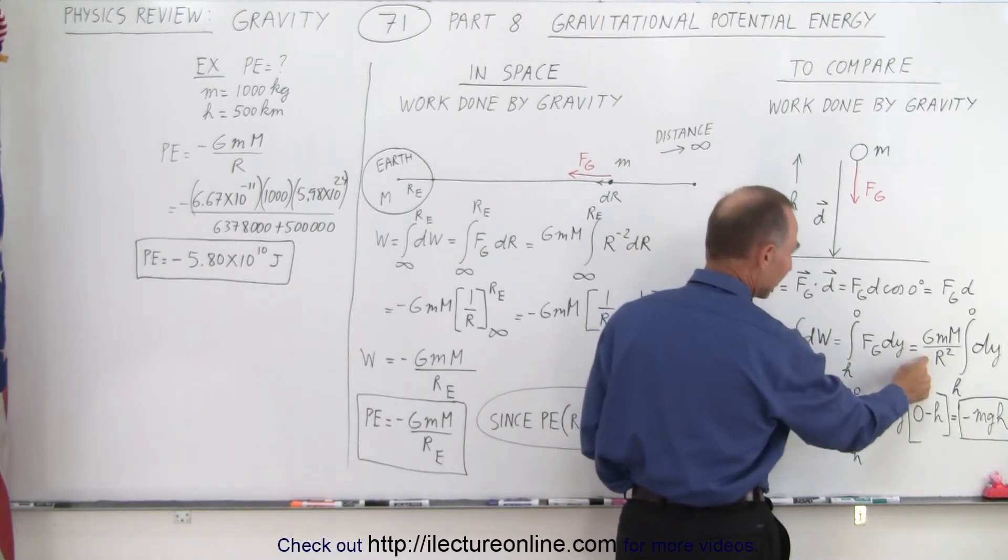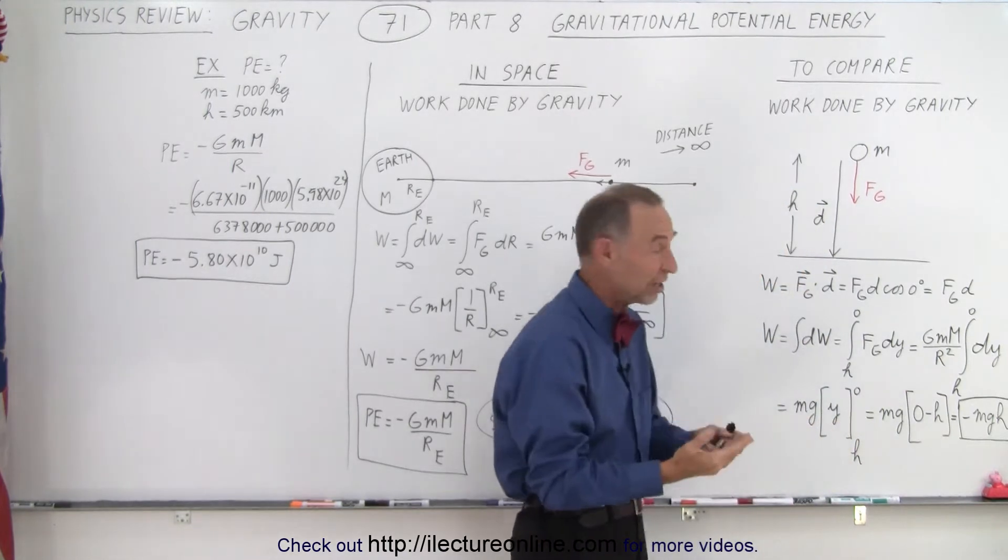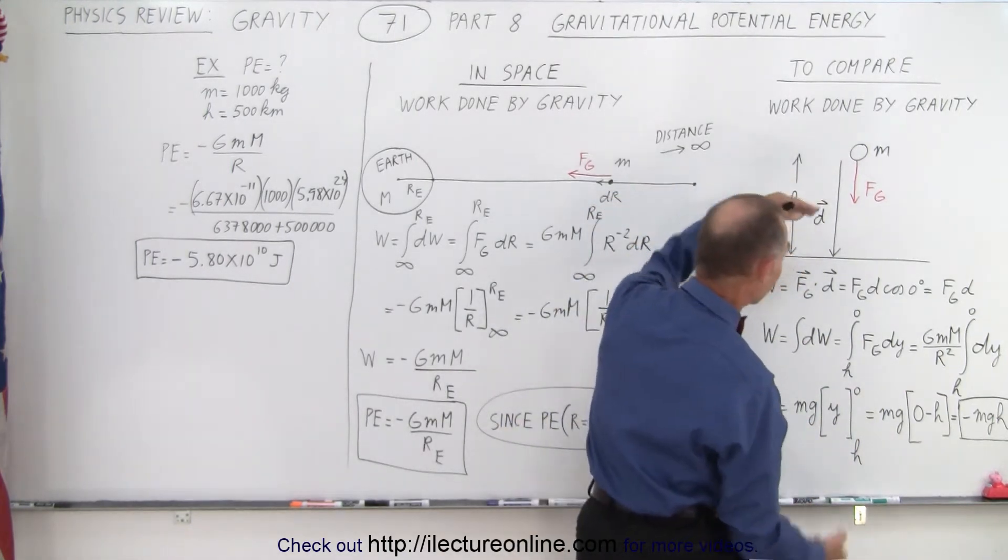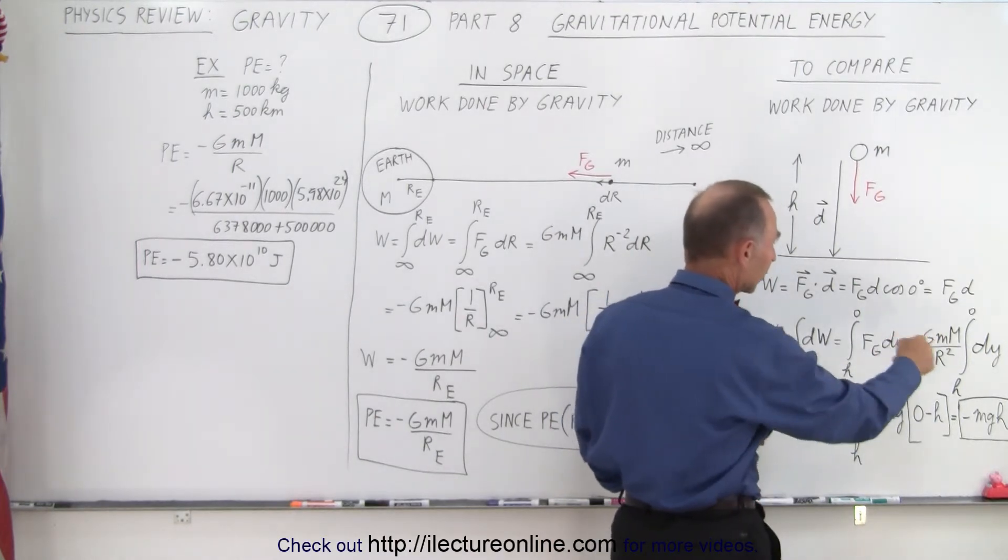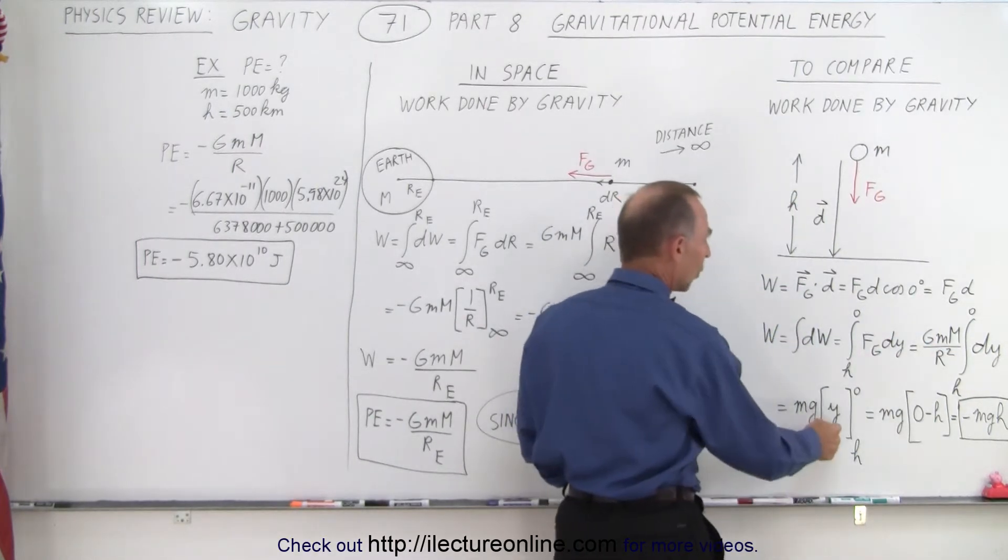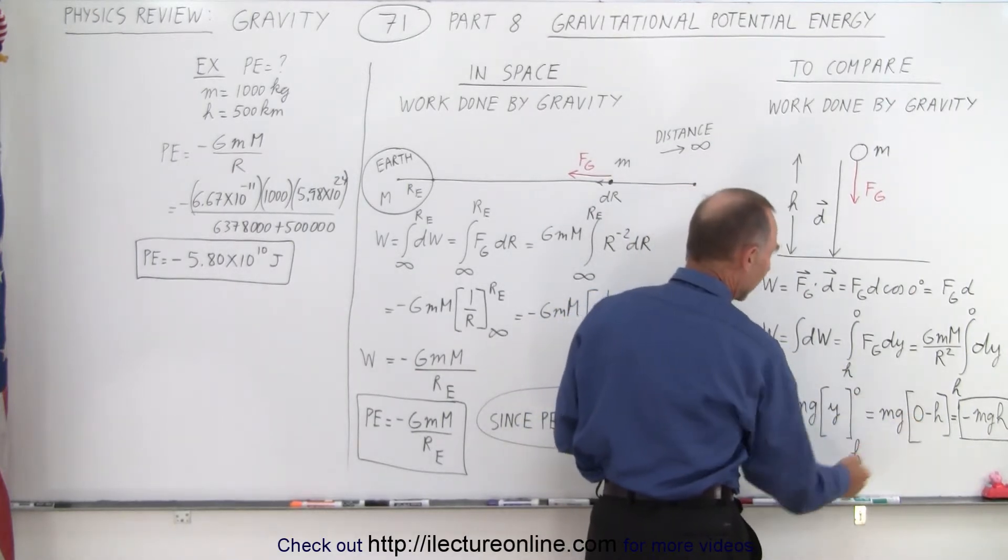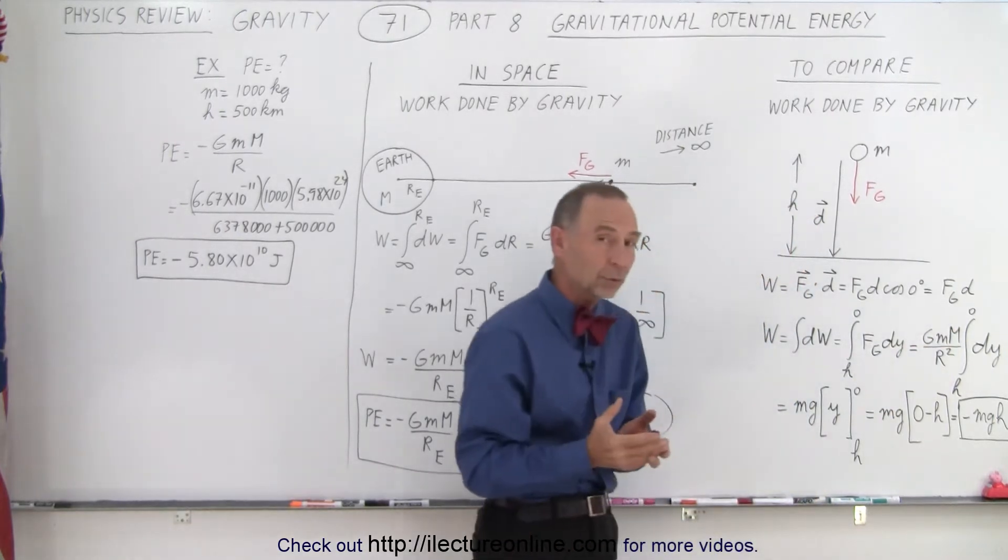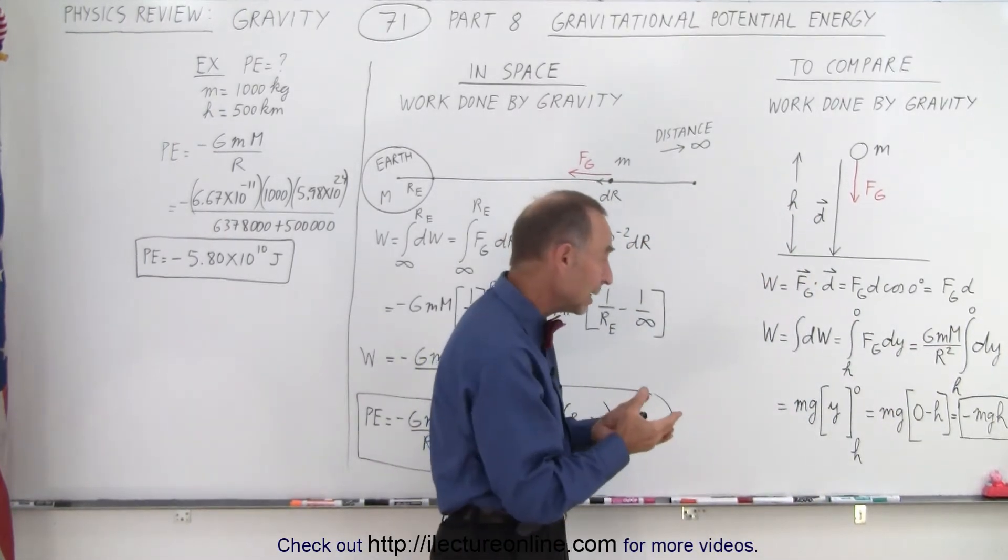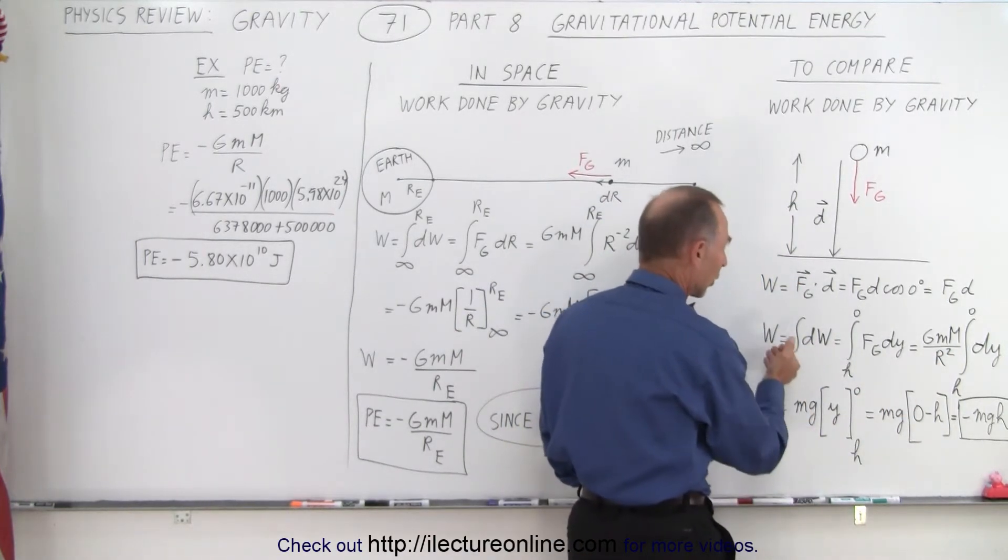So it's going to be the force of gravity which is GMm over r squared. Now in this case r doesn't change because it's the radius of the earth, so h is so small here that essentially r doesn't change. And so it's simply an integral of dy, and that is y evaluated at the limits, and we get minus h. And of course instead of writing Gm big M over r squared, we can set that equal to the force of gravity equal to mg.